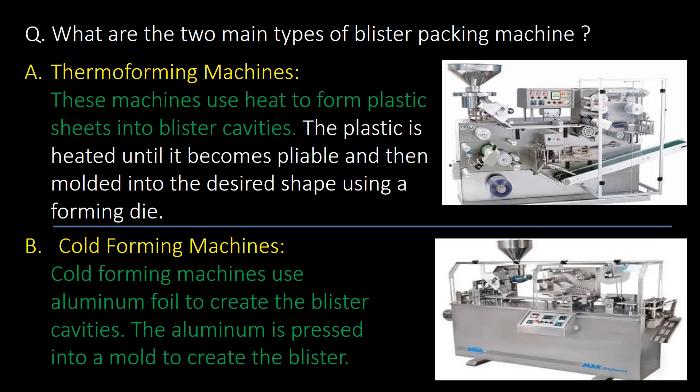First question: what are the two main types of blister packing machine? The first type is thermoforming machines — these machines use heat to form plastic sheets into blister cavities. The second type is cold forming machines — cold forming machines use aluminum foil to create the blister cavities, and the aluminum is passed into a mold to create the blister.